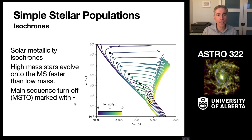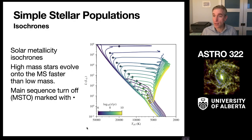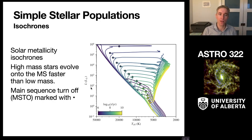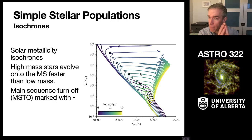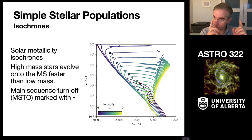Isochrones look like this in the theoretical HR diagram space, with effective temperature on the horizontal axis and luminosity on the vertical. The different curves show different isochrones — high mass stars evolve off the main sequence faster than low mass stars. The darker blue colors represent the early stages of a cluster's evolution. As the cluster evolves, stars are found along these lines. This is related to but very different from an evolutionary track: an evolutionary track shows one star at many different times, while an isochrone shows all stars at the same time.